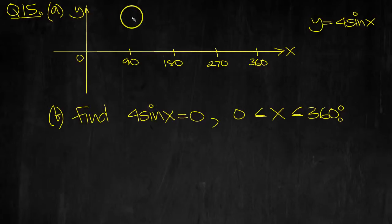So 4 sin x, sketching this first of all. Well sin of 0 is 0, sin of 90 is 1, and 4 times 1 is 4, so that height is 4. So let's just draw that along here to help with sketching.